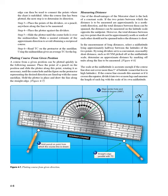If the two points between which the distance is to be measured are approximately in a north-south direction, and the total distance between them can be spanned, the distance can be measured on the latitude scale opposite the midpoint. However, the total distance between any two points that do not lie approximately north or south of each other should not be spanned unless the distance is short. In the measurement of long distances, select a mid-latitude lying approximately halfway between the latitudes of the two points.